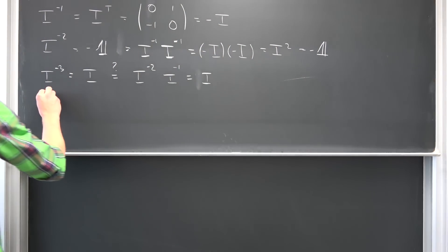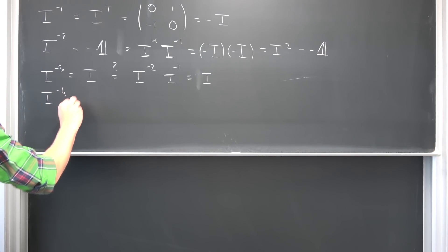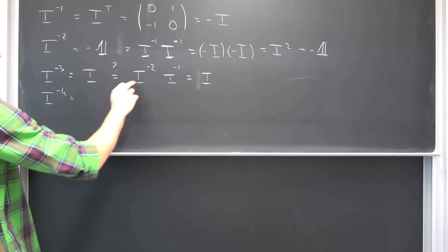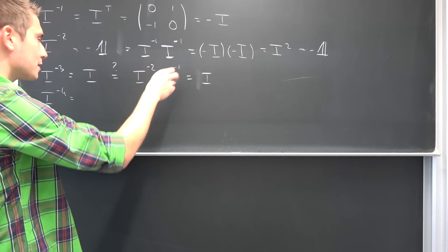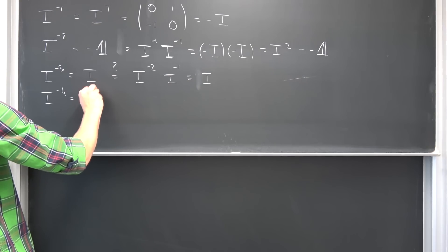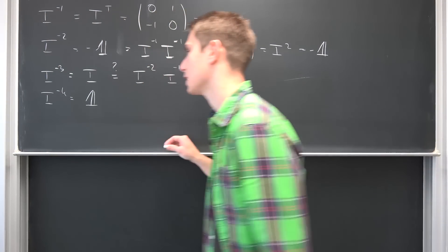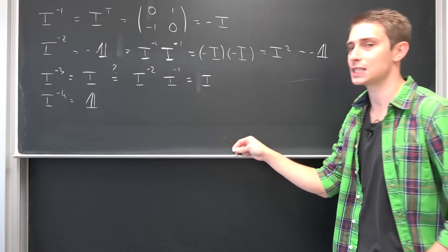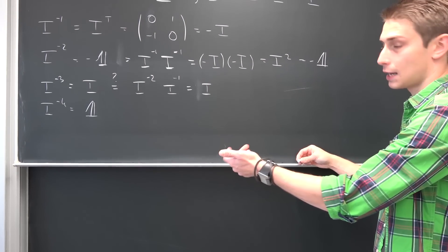And now i to the negative 4th power is going to result in: i to the negative 2 times i to the negative 2 is negative 1 times negative 1, which is just the identity matrix — and so on. You see, it is cyclic yet again.